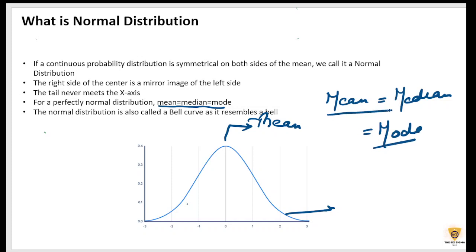So this is a very important thing that you need to learn about - what is a normal distribution. This is called a bell curve because this resembles a bell. If you see this curve, it resembles a bell. So this is called a normal distribution.